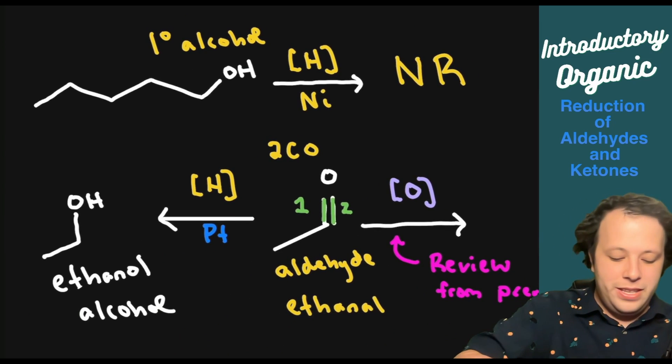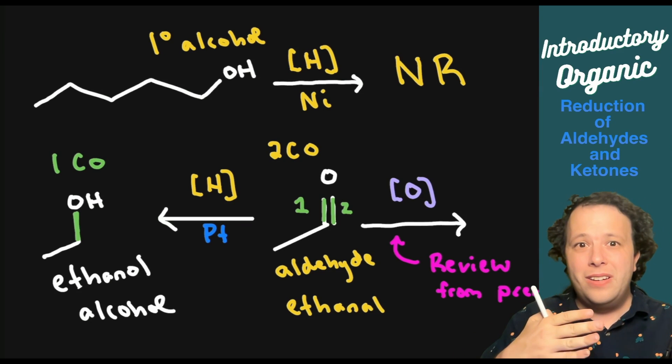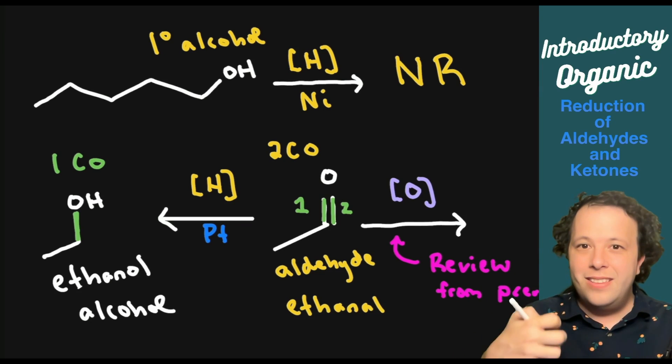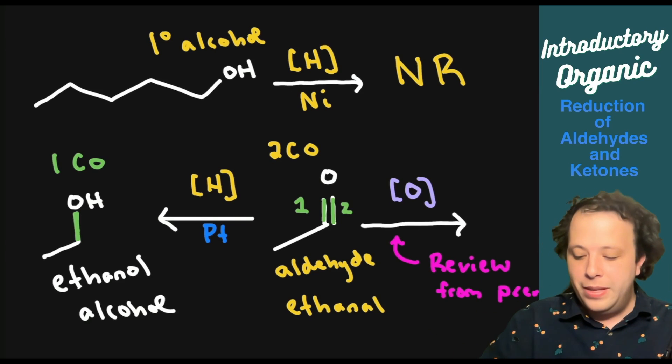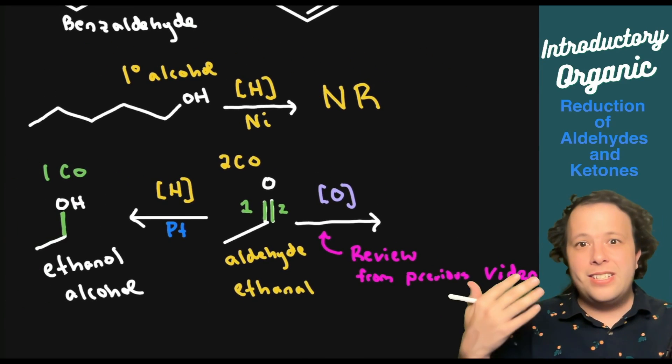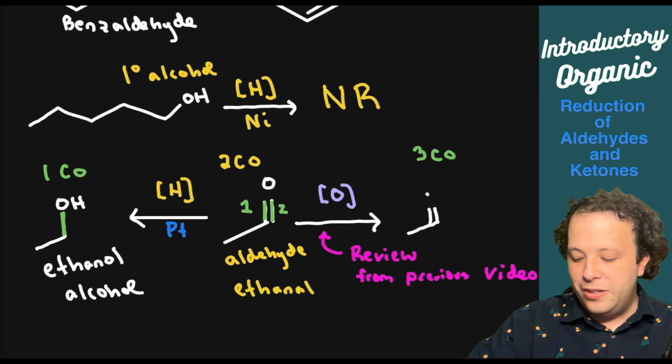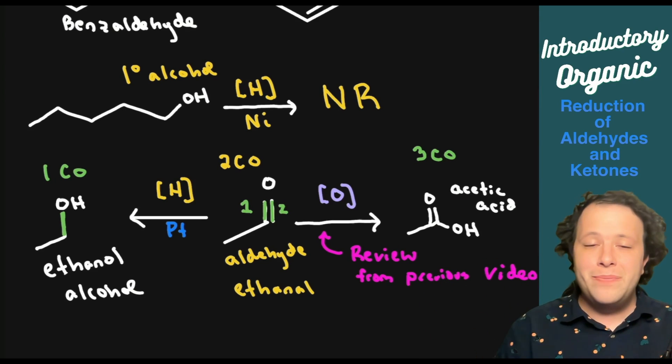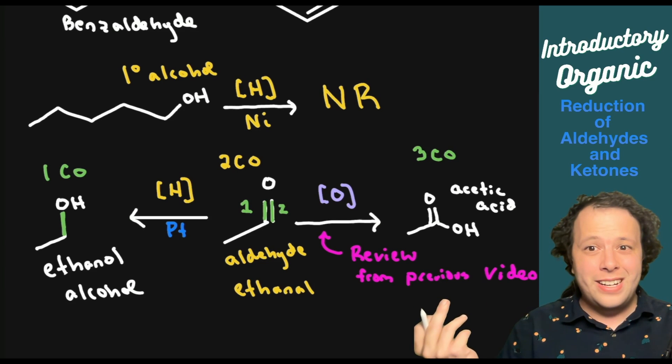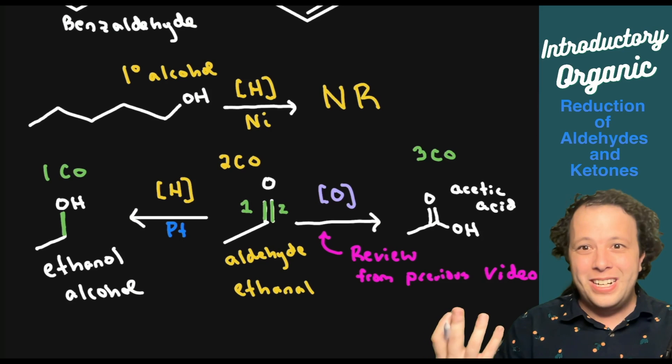In the reduced structure, notice we only have one C-O bond. You went from two to one, you reduced the number of C-O bonds. Now when it comes to oxidation, it's all about adding oxygen. We'll have three C-O bonds. In this case, it'll go to a C double bond O with an OH group, or a carboxylic acid. It's going to make acetic acid, also commonly known as vinegar. You can go from ethanol all the way to acetic acid, a very large different opportunity of reactions.